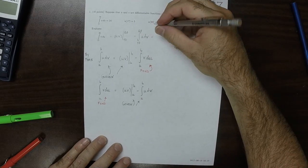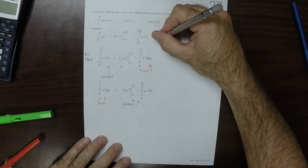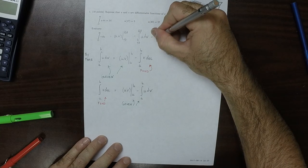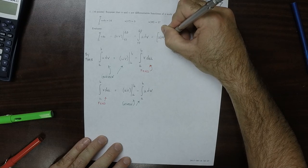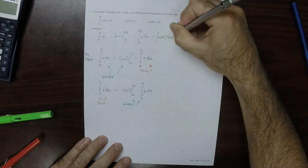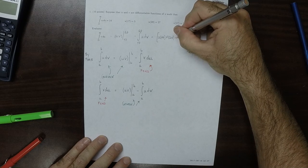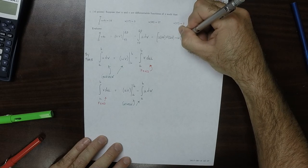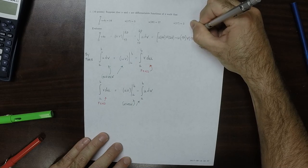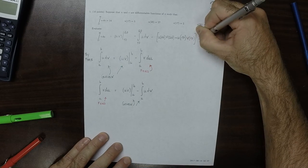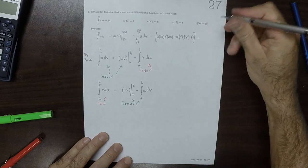This will be U evaluated at 20 times V evaluated at 20, minus U evaluated at 17 times V evaluated at 17, that's 5, and then minus that integral, which we're given to be 14.